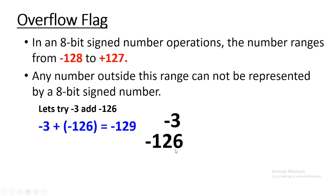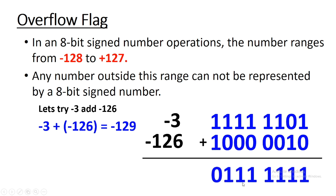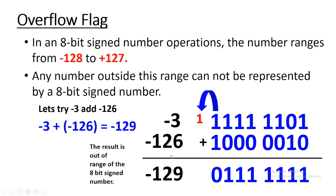Converting minus 3 and minus 126 into 2's complement gives us their binary representations. When we add them, we get a result where a carry bit is generated at bit 7. There is carry generated only from bit 7, not from bit 6. Using the XOR formula, the overflow flag is therefore 1. This result is out of the signed 8-bit range, and that's why the overflow flag is set.